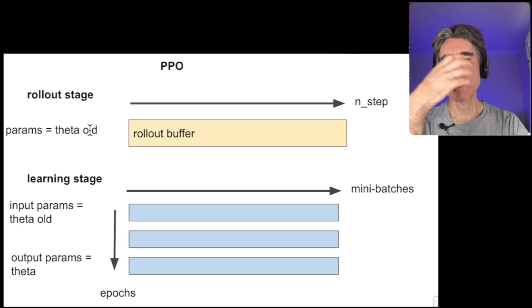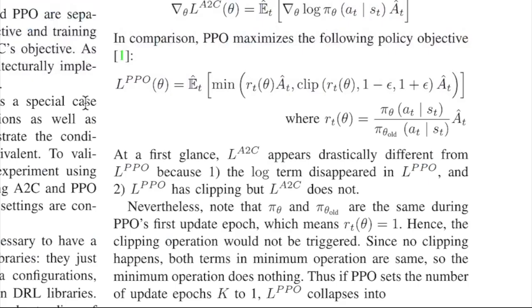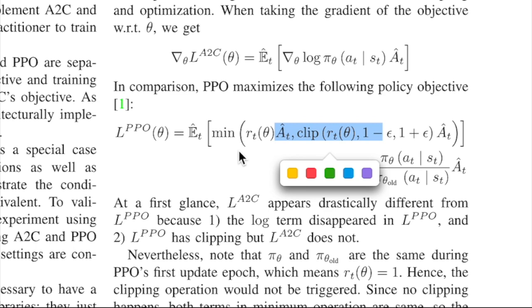So if we had a single giant batch for a single epoch, theta would equal theta old. That means this RT(theta) — the ratio of theta to theta old — becomes one. And the clip drops out because the ratio is one, so there's no point clipping. The clip completely vanishes, the min vanishes, and we're basically left with the expectation of A_T, which is exactly what the A2C objective would be if it was written correctly.